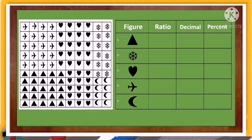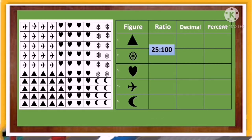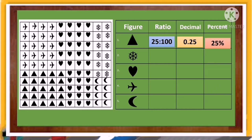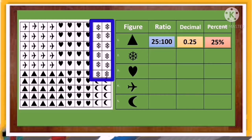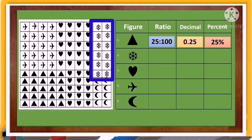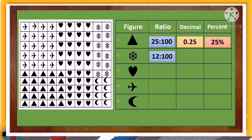Time's up! Let us now answer your activity. For number one — triangles — the ratio is 25 is to 100, the decimal is 0.25 or twenty-five hundredths, and the percent is 25 percent. Number two — snowflakes — there are 12 snowflakes out of 100 figures. The ratio is 12 is to 100, the decimal is 0.12 or twelve hundredths, and the percent is 12 percent.